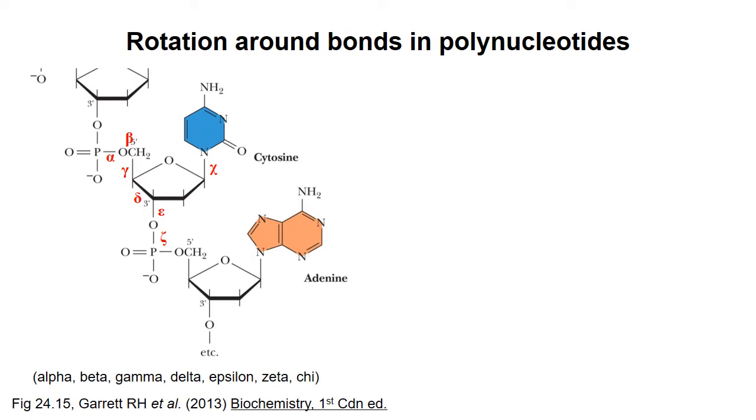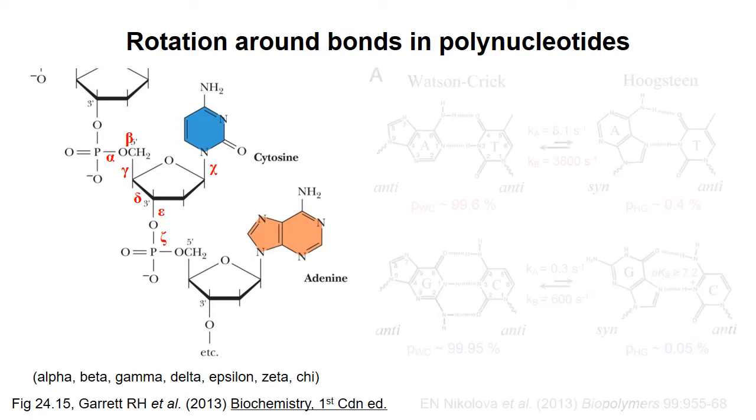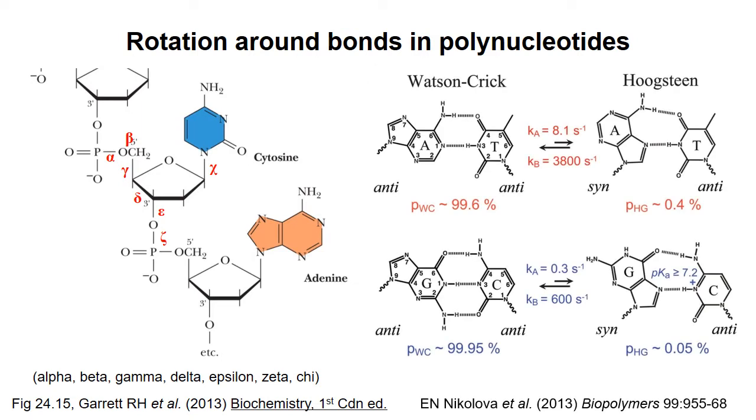But even in B-DNA, individual purines can flip to the syn-configuration, as shown in the diagram on the right. If the A in an AT base pair shifts from the anti to the syn-configuration, by rotation around the chi-bond, then an alternate pair of hydrogen bonds can form between it and the T. The same thing can happen if the G in a GC base pair goes from anti to syn.